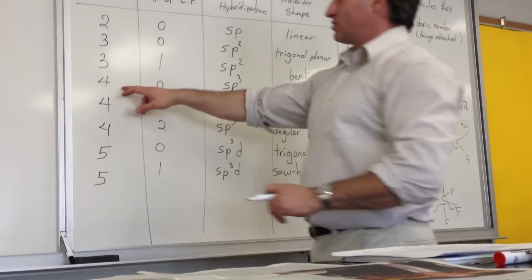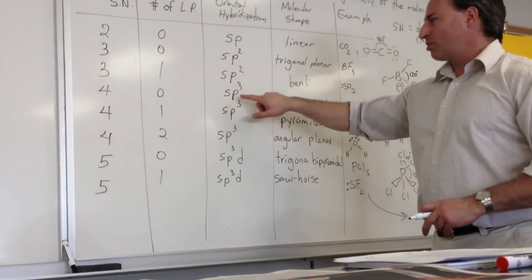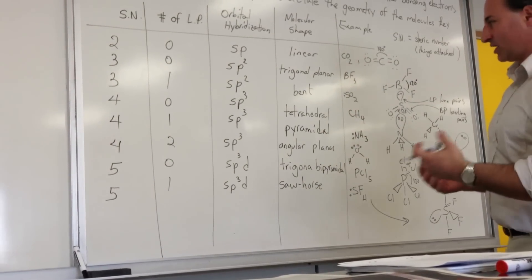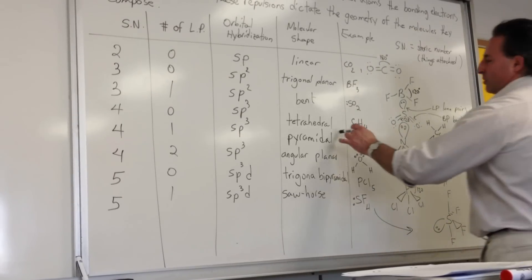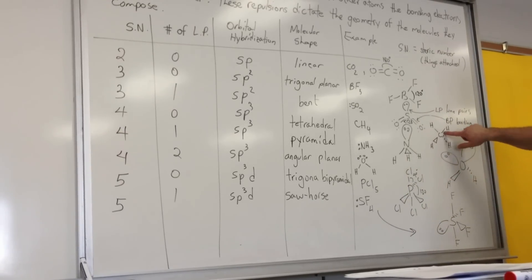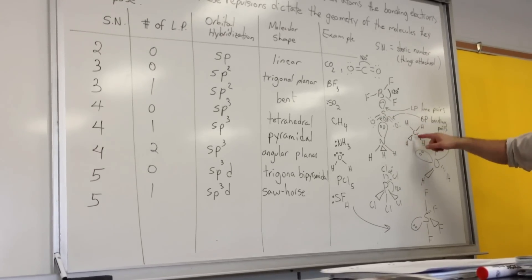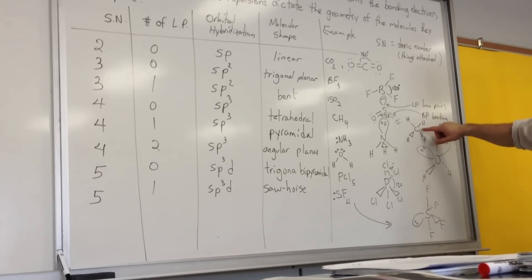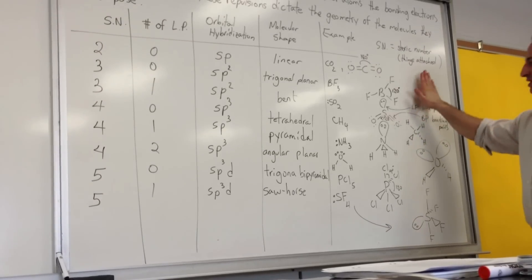If we have four things attached to a central atom with zero lone pairs, it's going to be SP3 hybridized — one S orbital combines with three P orbitals to form four equivalent-energy SP3 hybrid orbitals. Methane is an example; the geometry is tetrahedral. Bond lines in the same plane as the board are drawn as lines, bonds coming out toward you are drawn as a triangle, and bonds going behind the plane are drawn with hashes.